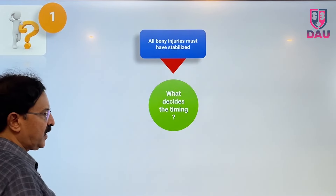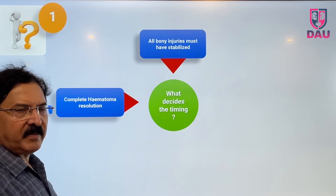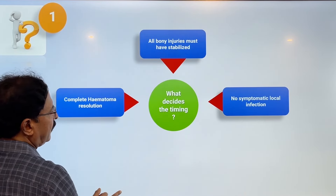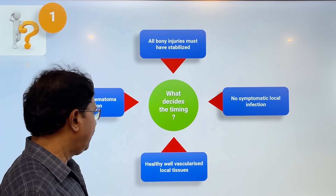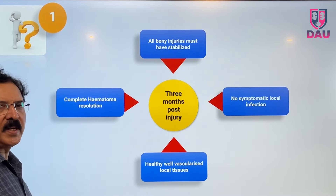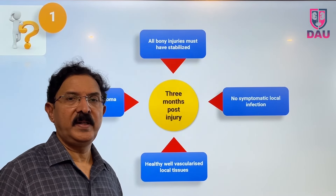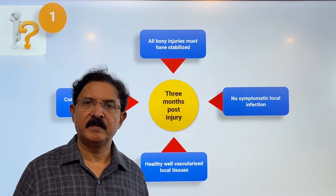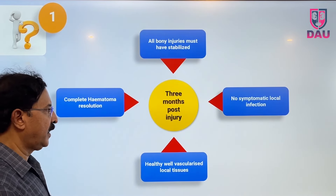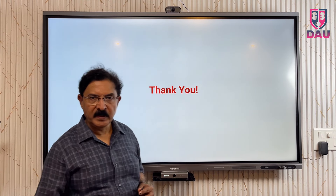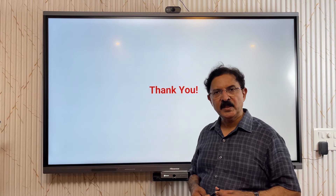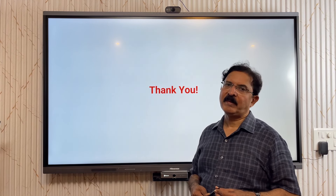So, what decides the timing of the operation? All bony injuries must have healed, the hematoma must have completely resolved, there should be no symptomatic local or adjoining infection, and all adjoining soft tissues must have become healthy and well vascularized. This usually happens three months post-injury — that is why we ask most patients with an SPC to wait three months. What I have told you here is what to do during that waiting period so it does not get prolonged unnecessarily. I hope you will now be able to decide easily when to operate a case of pelvic fracture urethral injury. Thank you.